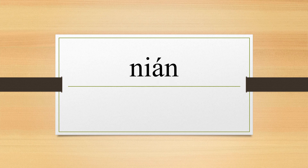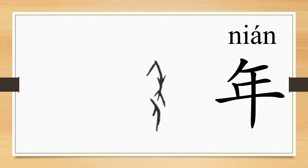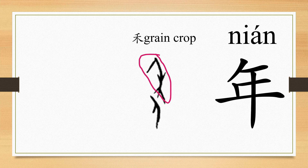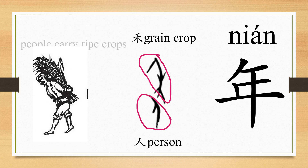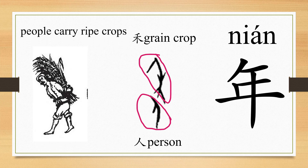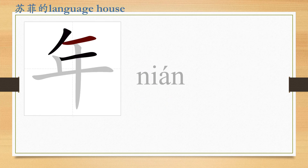Hello, today we are going to learn the character Nian. The ancient Chinese character for Nian consists of the character He, which means green crop, and Ren, which means person. So Nian combines the image of a person carrying the ripe crops, indicating a year has passed. So Nian means year. Now read after me.